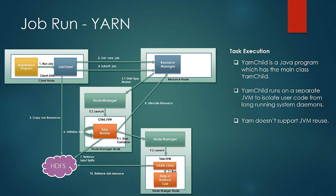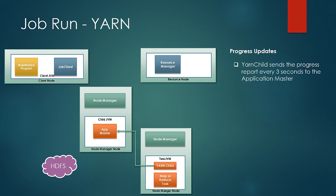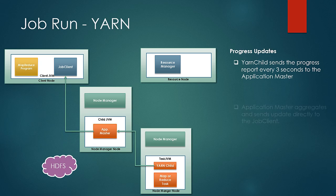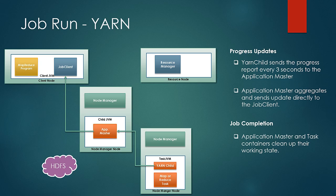As the next step, YARN child retrieves all the job resources from HDFS, localizes them, and runs the MapReduce task. The next phase is the progress and status update phase: YARN child sends the application master progress reports every three seconds, and the application master aggregates the progress and updates the client directly. In the job completion phase, the application master and the task containers clean up the intermediate data and terminate themselves upon job completion.